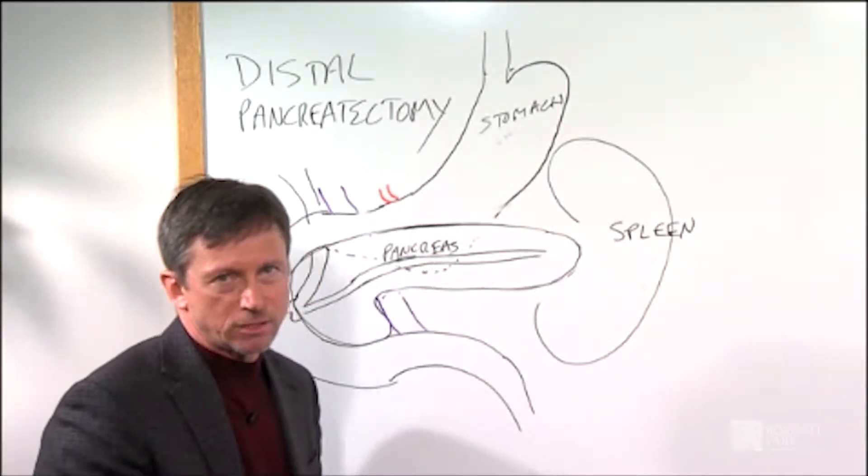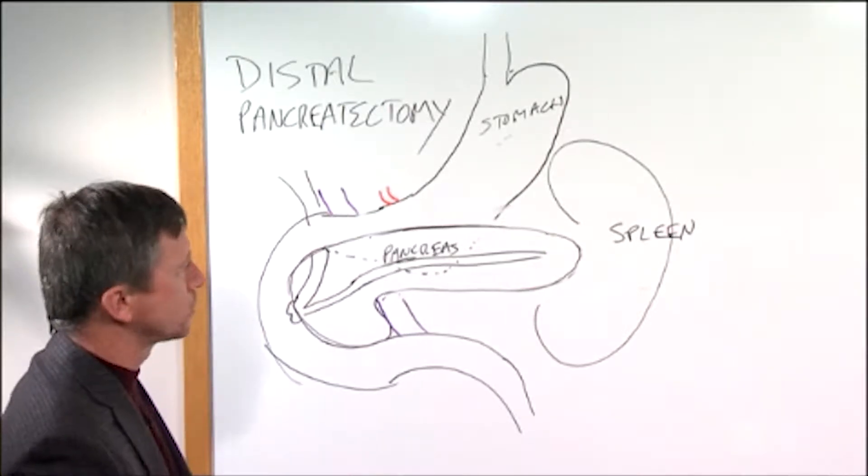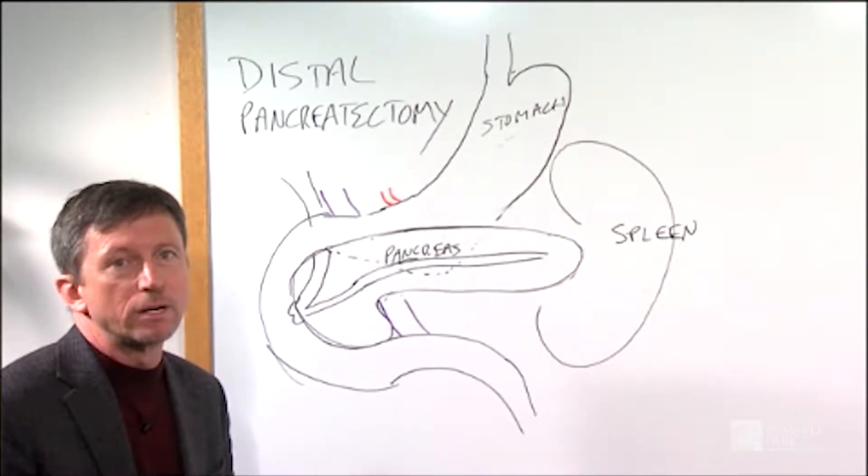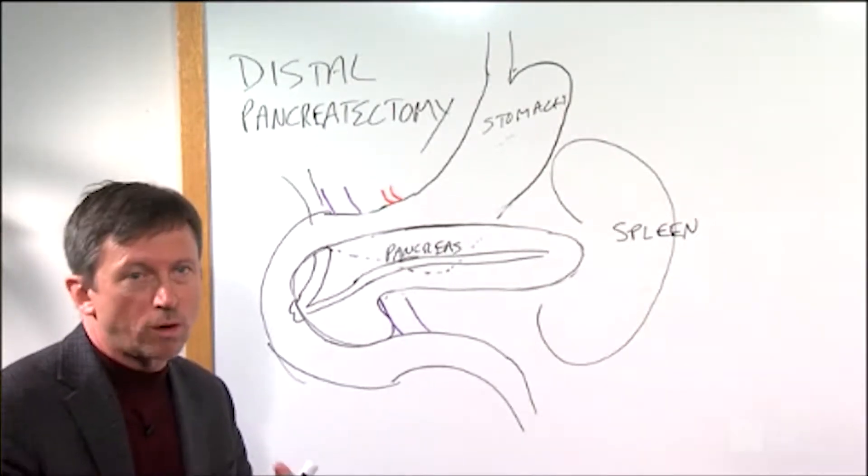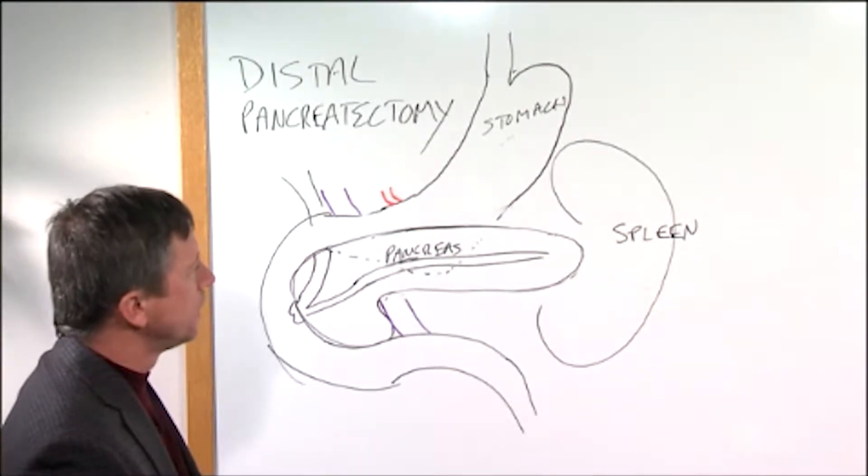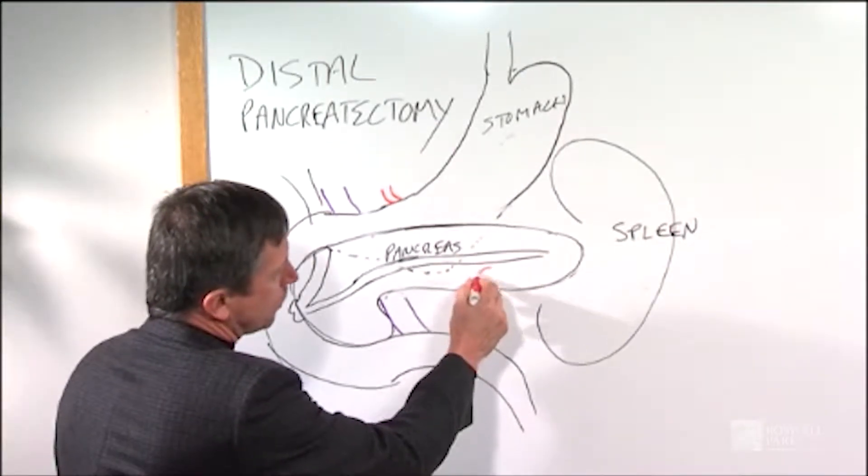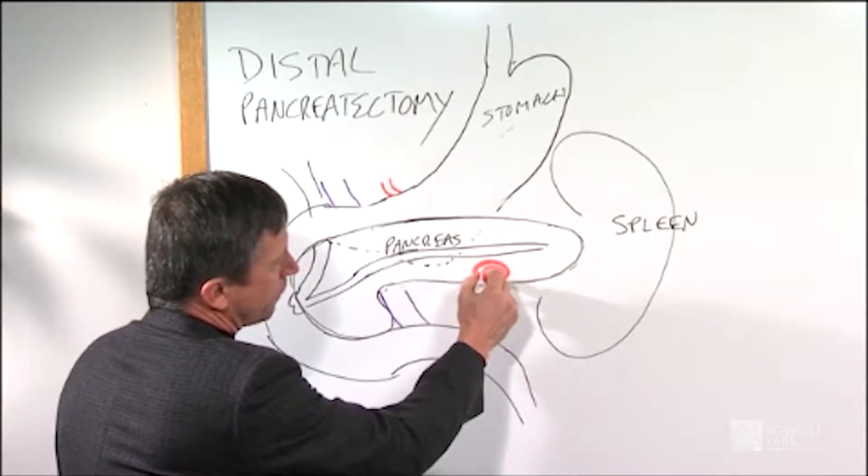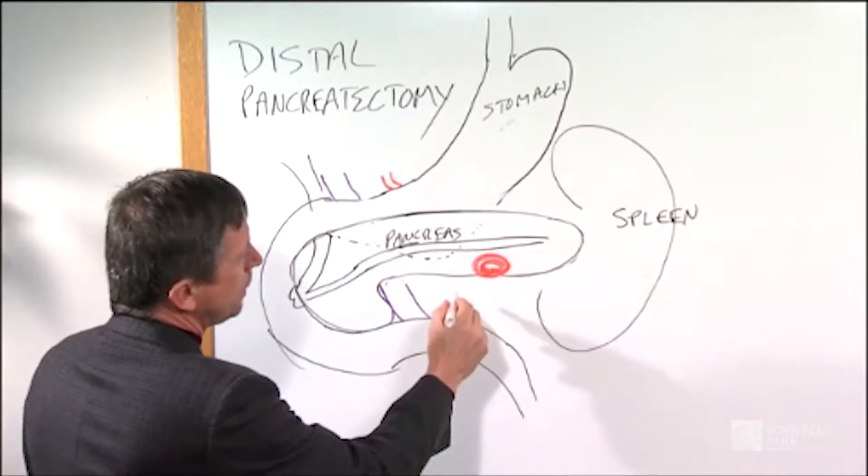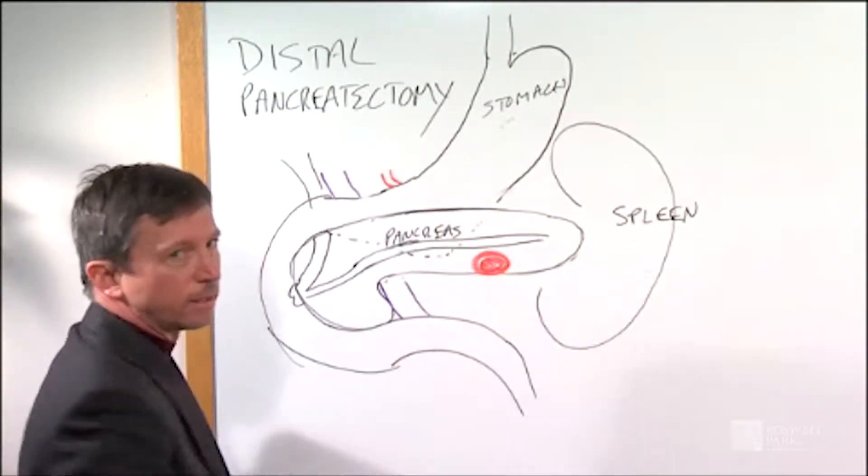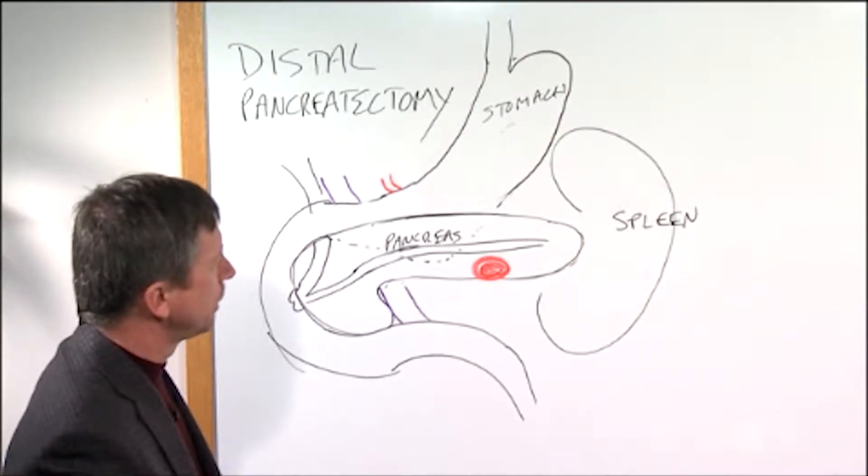Now we do distal pancreatectomies for a number of indications, and we'll specifically go over in your particular case what that indication is. For example, you can have a tumor here called a neuroendocrine tumor, and that can be a reason that the pancreas is being removed.